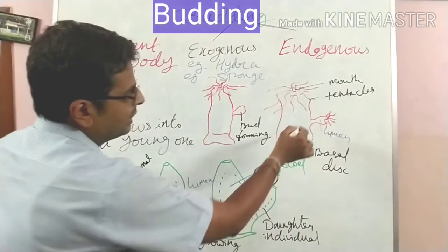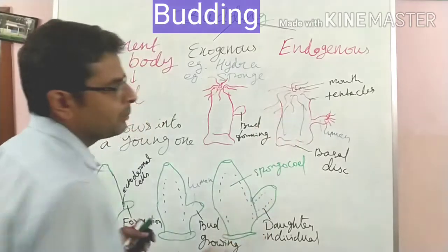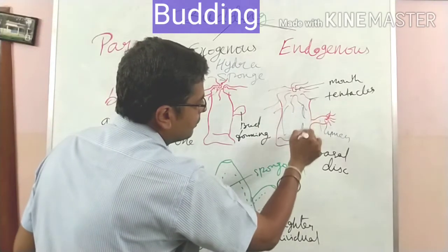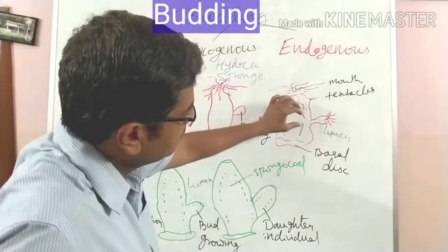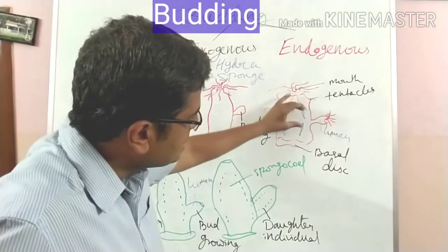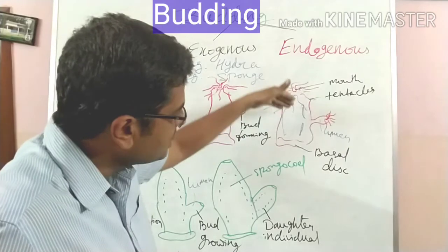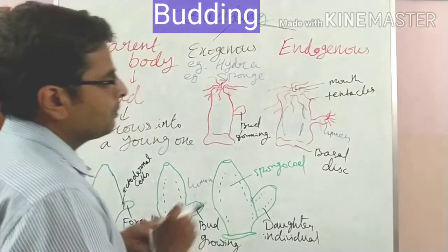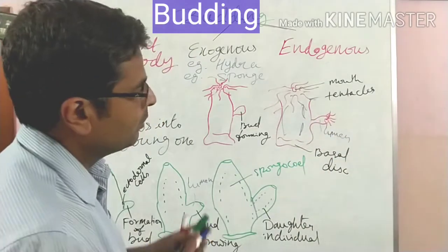The lumen in the bud connects into the gastrovascular cavity of the parent body. The ectodermal cells are followed by endodermal cells also pushing into the bud. By this way, the gastrovascular cavity also connects into the lumen of the bud.